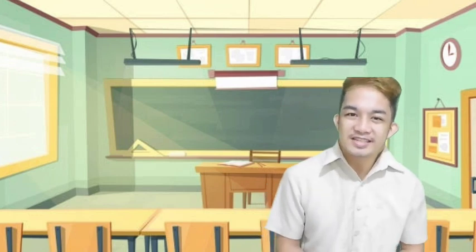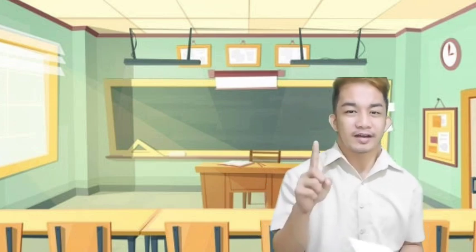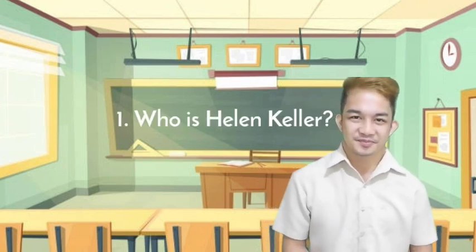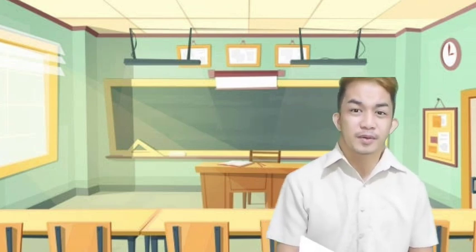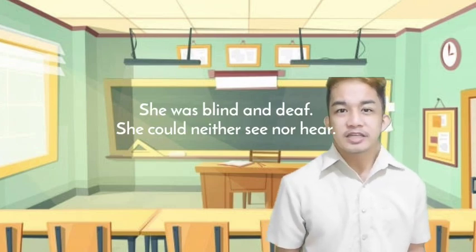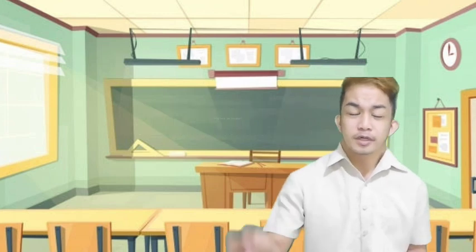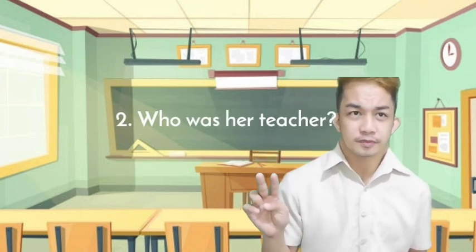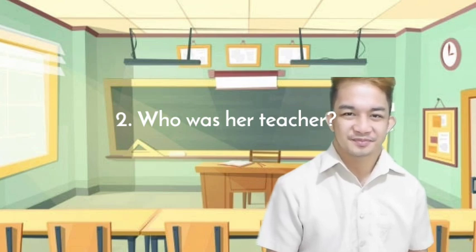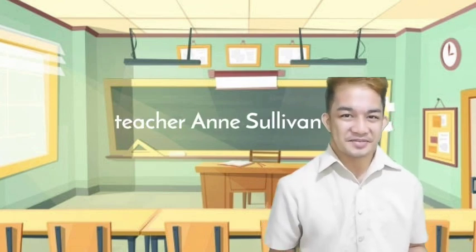Now let's have the comprehension questions, kids. Number one: Who is Helen Keller? She was blind and deaf, and she could neither see nor hear. Number two: Who was her teacher? Teacher Ann Sullivan.